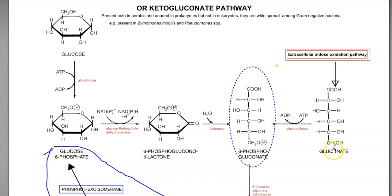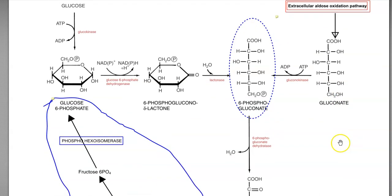The 6-phosphogluconate can be further metabolized into gluconate with the help of glucokinase enzyme. This particular pathway can be referred to as the extracellular aldose oxidation pathway, which is also commonly distributed in Gram-negative organisms. Now we look at how this 6-phosphogluconate is metabolized in the ED pathway.